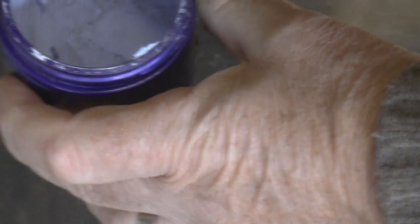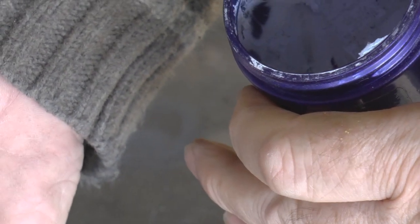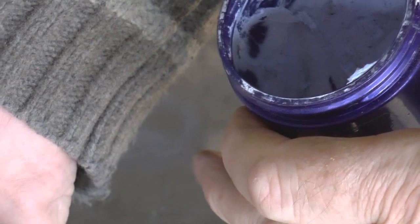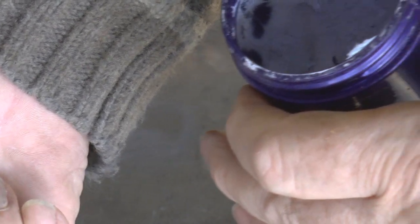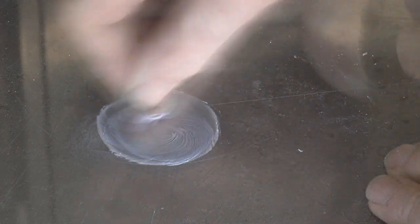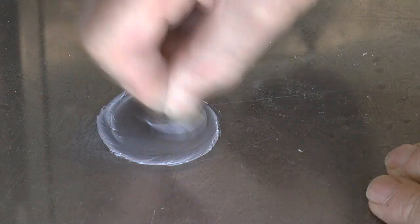We'll use some of this Maguire's NXT Next Generation all metal polish. We'll pop some of this on the surface here. And again keeping pressure in the middle to try and keep this surface as flat as possible.